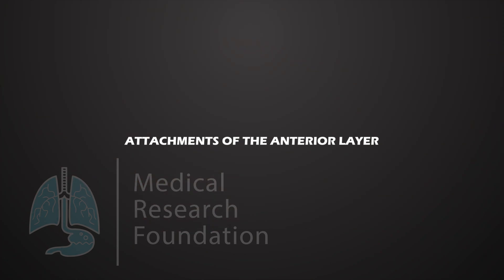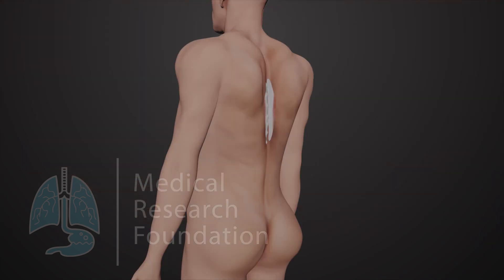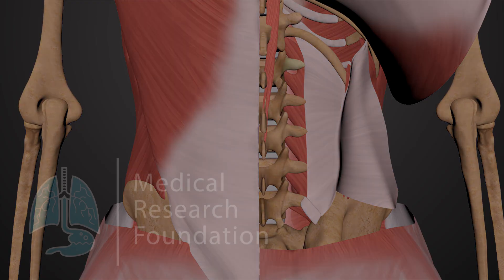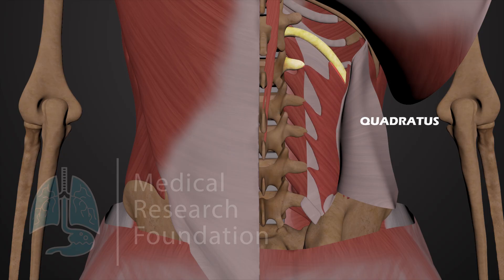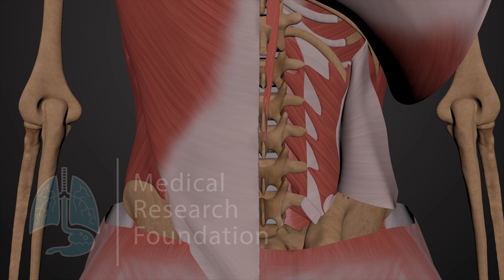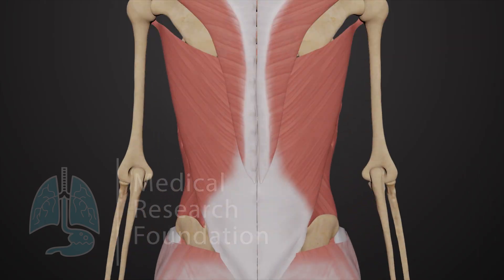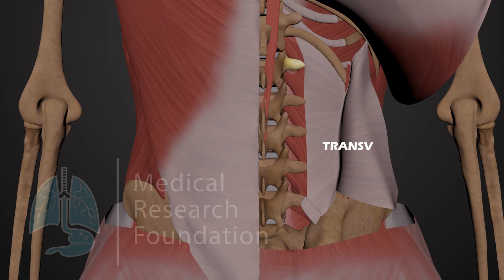Attachments of the anterior layer. Above, it is attached medially to the transverse process of the first lumbar vertebra, and laterally to the twelfth rib in front of the quadratus lumborum, forming a thick tendinous strip called the lateral lumbocostal arch. Below, it attaches to the iliolumbar ligament and iliac crest, and medially to the vertical ridges on the anterior surfaces of the transverse processes of the lumbar vertebrae.